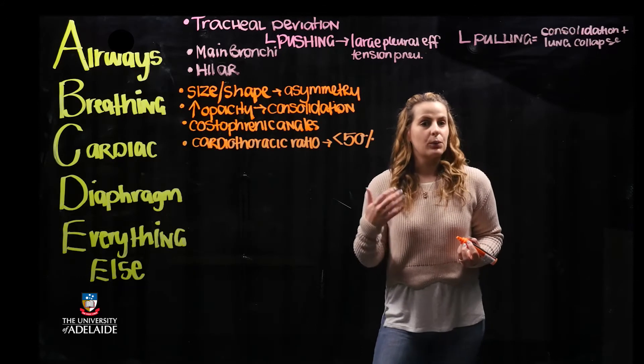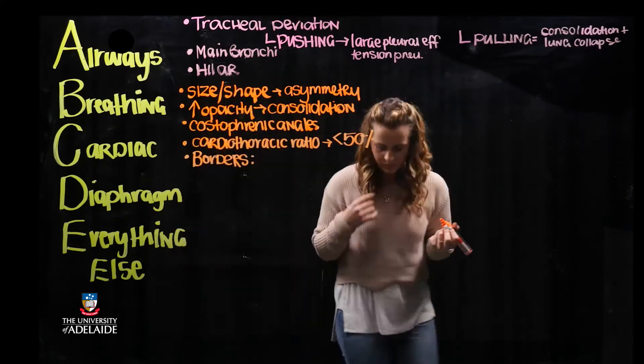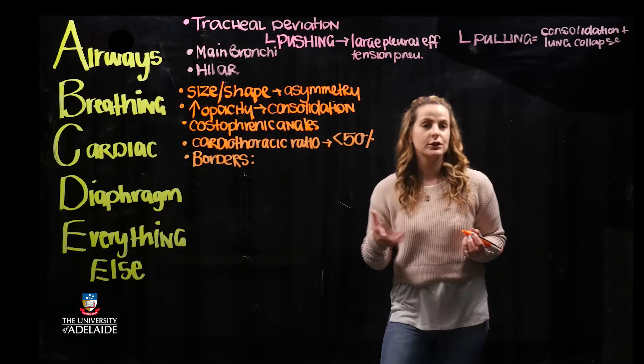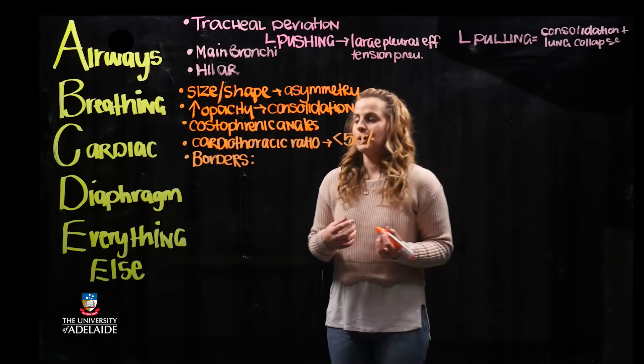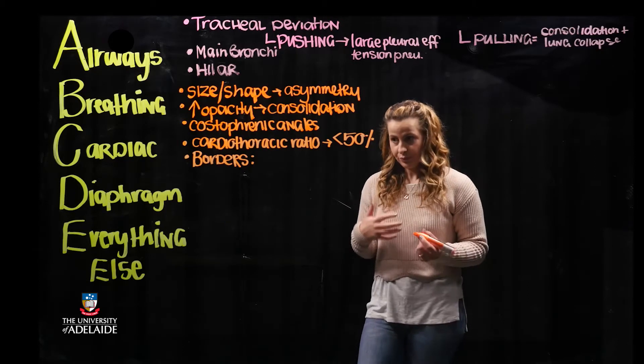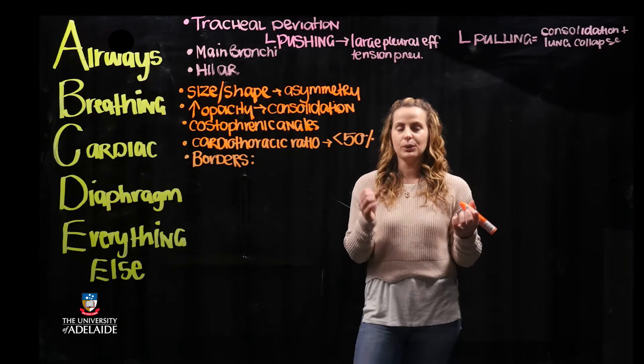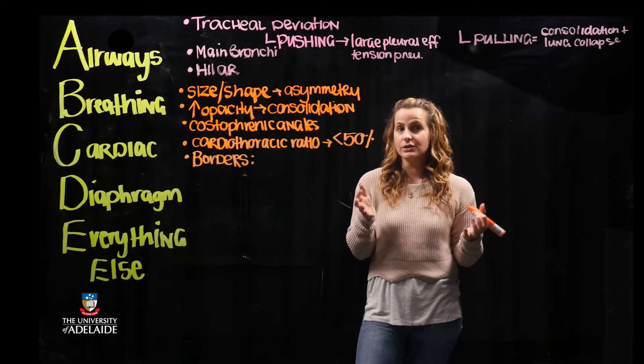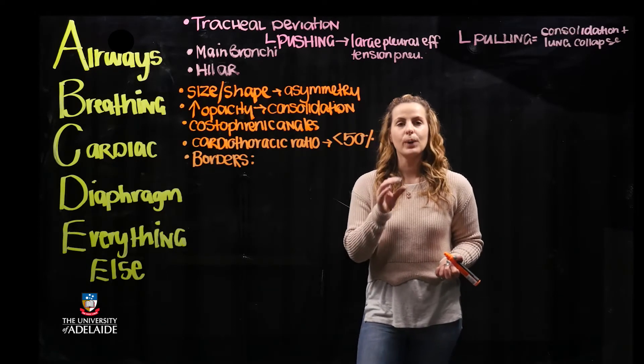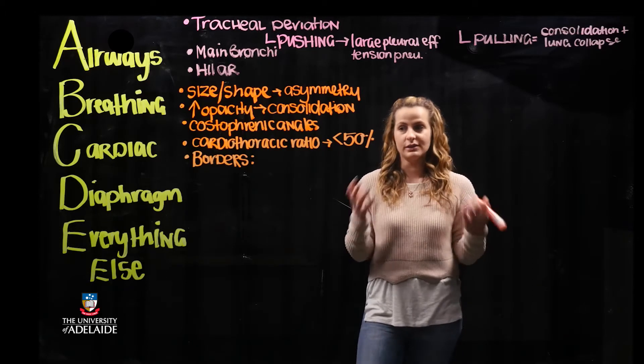The second aspect that we consider is the borders of the heart. What I mean by examining the borders is there is a sign known as the silhouette sign, which refers to the loss of a border or a region of contrast opacity. If we consider the heart, we know we're going to have left and right borders, and this corresponds to different lobes of the lung. If you lose one of those borders, it is suggestive of pathology with the surrounding lung tissue.